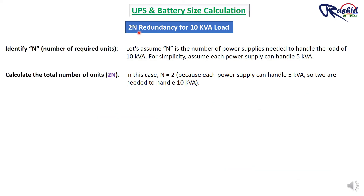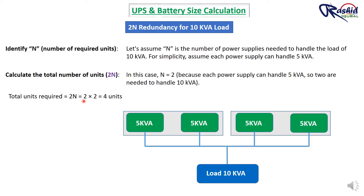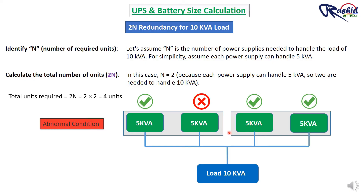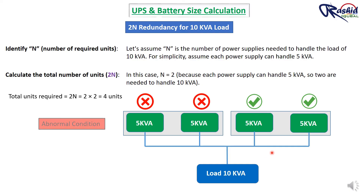For 2N redundancy with a 10 kVA load, we need four 5 kVA UPS units in two complete sets. Both sets are active simultaneously, sharing the load or capable of taking over completely. If one or two UPS units fail, the other two continue supplying power without disruption. Only if three UPS units fail would the single remaining unit be unable to handle the full 10 kVA load.